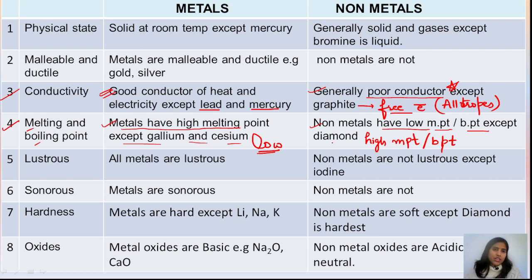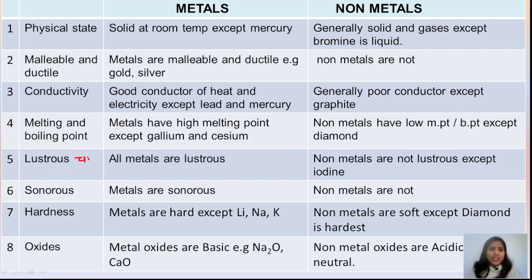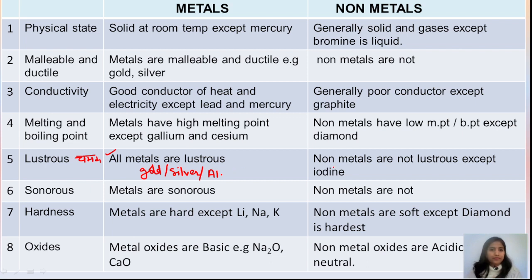The next property is lustre — a shiny appearance. Metals show lustrous properties. Gold, silver, and aluminum foils show very high lustre. Iron handles and steel (an alloy of iron, chromium, and nickel) are also highly lustrous. Non-metals are generally non-lustrous, but the exception here is iodine, which is lustrous — it shows a shiny appearance.